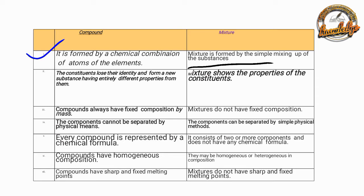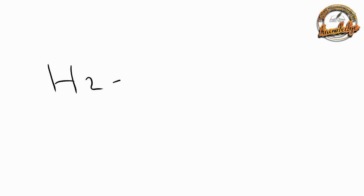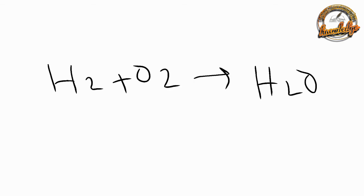The concept is that the constituents lose their identity to form a new substance, having entirely different properties from them. For example, H2O is formed from hydrogen and oxygen. The result is water.